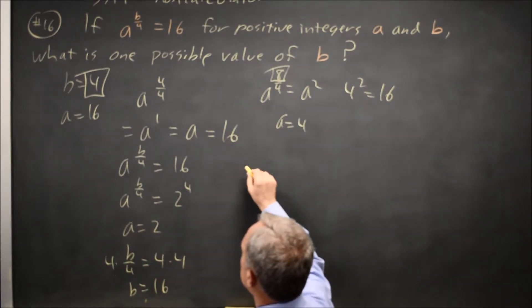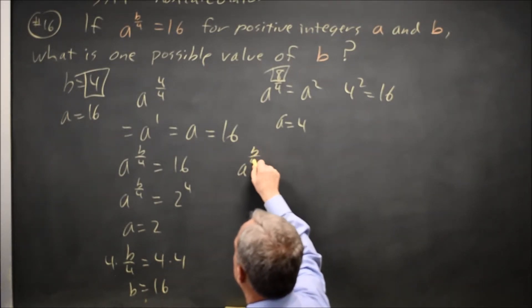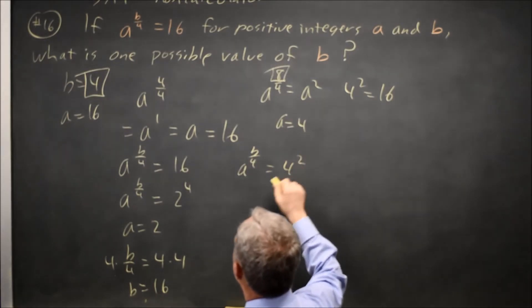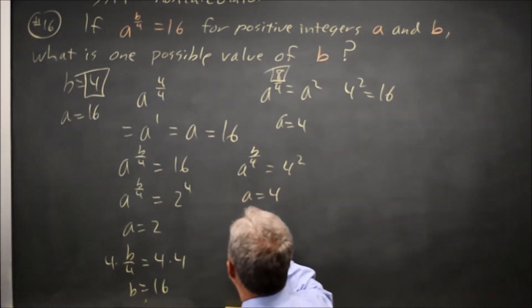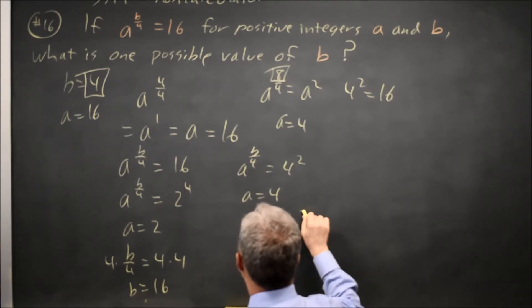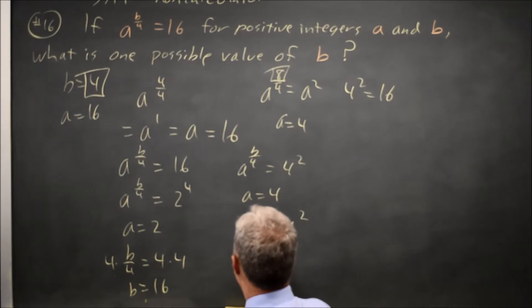Alternatively, 16 is 4 squared. So if a equals 4, that gives me 4 to the b over 4 equals 4 squared. So b over 4 equals 2. Well, if I'm dividing both sides by 4, I get b equals 8.